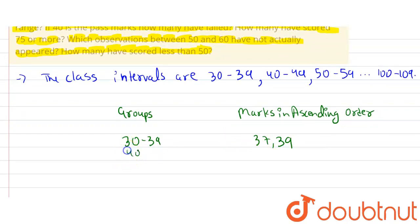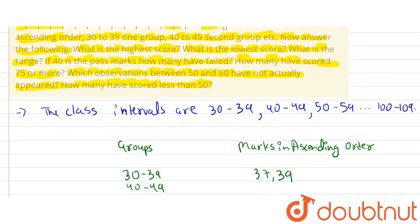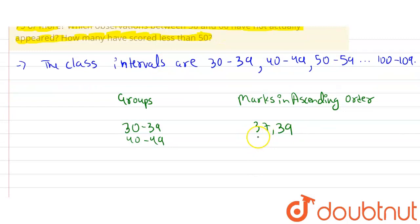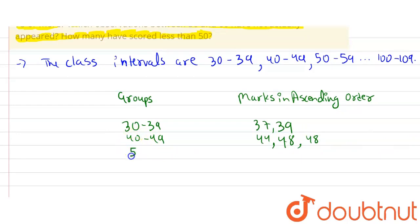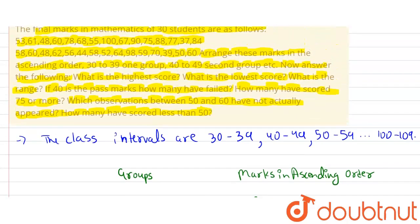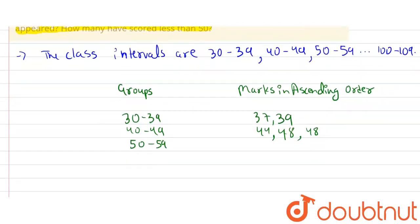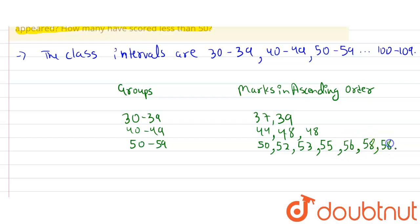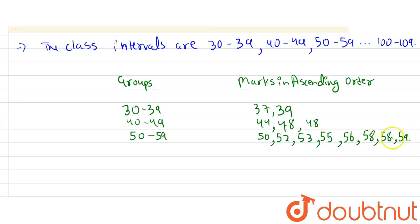The next group is 40 to 49, and the marks that lie under this group are 44, 48, and 48. Next, for 50 to 59, there are eight marks: 50, 52, 53, 55, 56, 58, 58, and 59.